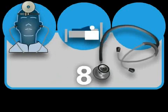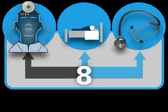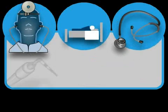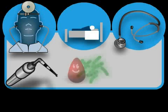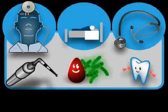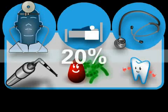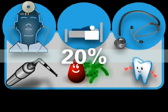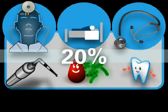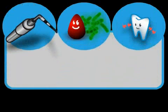Roughly two months after the last cleaning treatment, a re-evaluation takes place. The dentist waits eight weeks in order to allow the gingiva the necessary time to regenerate. During the re-evaluation, data is again collected and compared to the initial values. The plaque and bleeding values will hopefully be around 20% by now, excess tooth mobility should have decreased, and the probing depths should be clearly reduced.